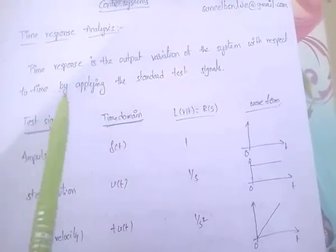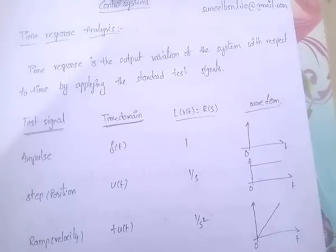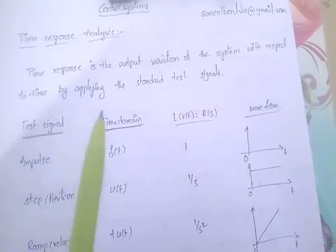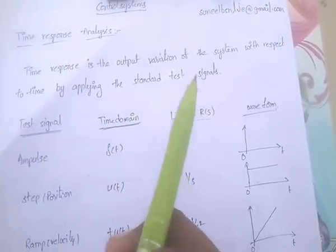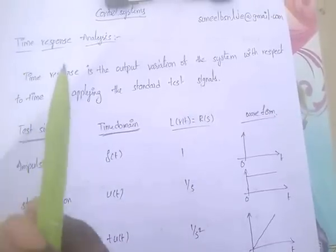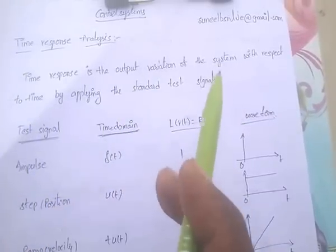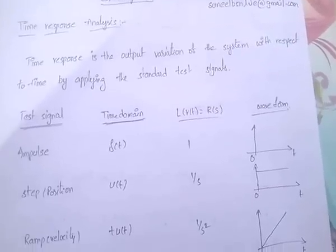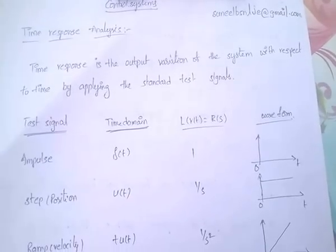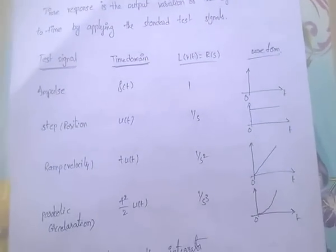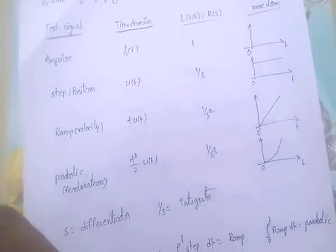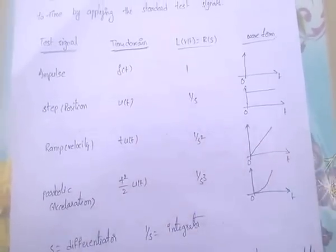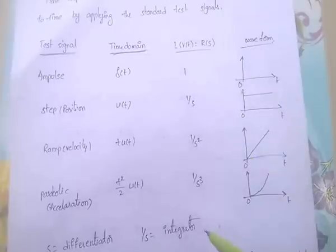What is time response analysis? Time response is the output variation of the system with respect to time by applying the standard test signals. The standard test signals are: impulse, step, ramp, and parabolic. These are standard test signals and their time domain and s-domain representations are as follows.